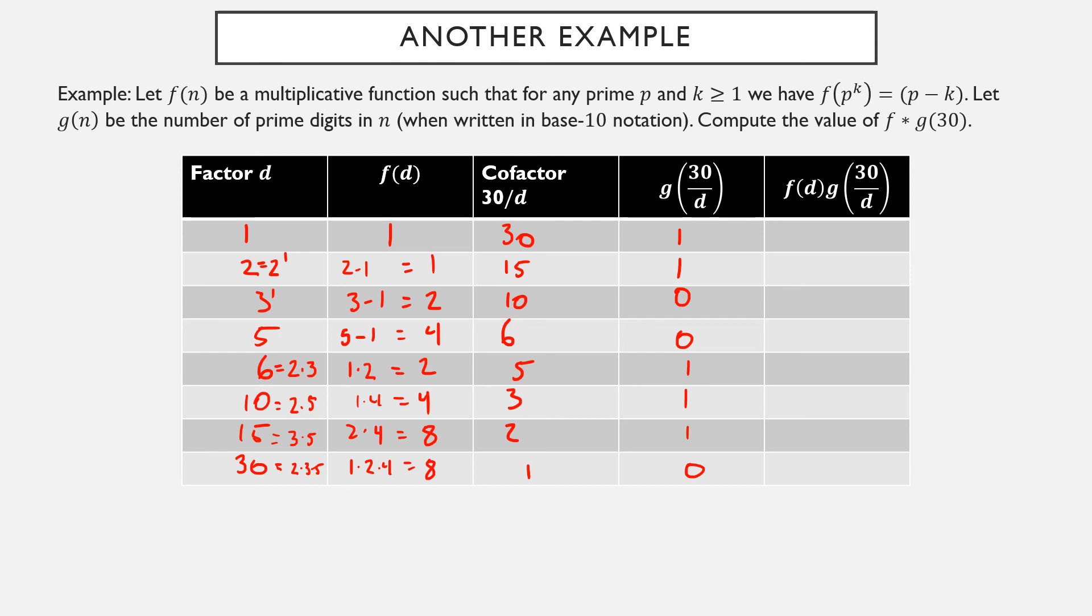Now I can take the product f(d), which is given in this column over here, times g(30/d), which is given in this column. A few of them pop right out because multiplying by 0, that's easy. Otherwise, I'm just going to fill it in with what was given as the value of f. And then finally, I simply need to sum these up. 1 plus 1, 0, 0, 2, 4, 8, and 0 add up to 16.